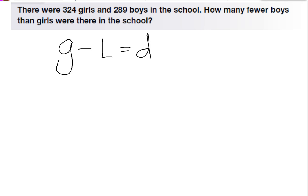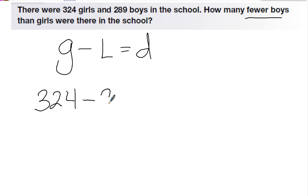There were 324 girls and 289 boys in the school. How many fewer boys than girls were there at the school? I'm going to use this pattern — I'm going to take the bigger number, the greater number, 324, and minus the lesser number, 289, to figure out the difference.